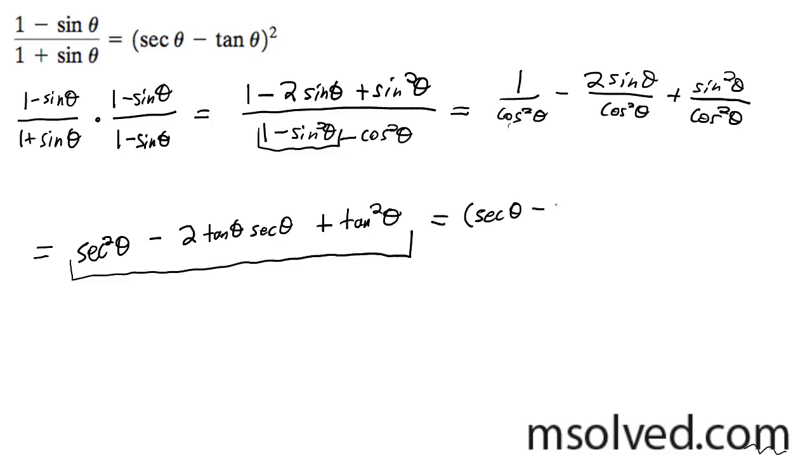This will be secant theta minus tangent theta times secant theta minus tangent theta. And this can be rewritten as secant theta minus tangent theta squared. And that's right there how we proved our equation.